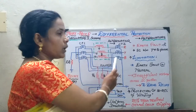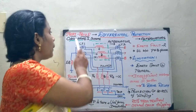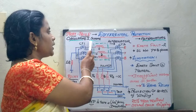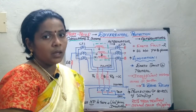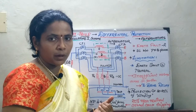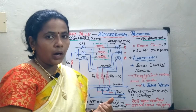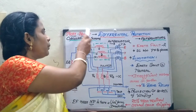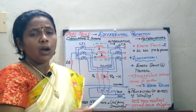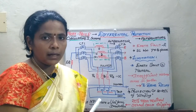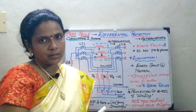Since the current circulates inside, this method is also called the Merz-Price circulating current scheme. The question can be asked in different ways — it can be referred to as differential protection of alternators for protection of stator windings, or as the percent Merz-Price circulating current scheme, or as the current differential protection for alternators.